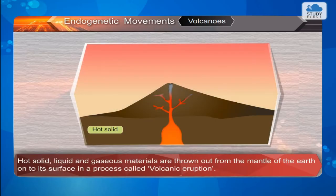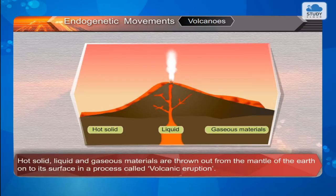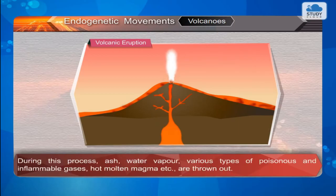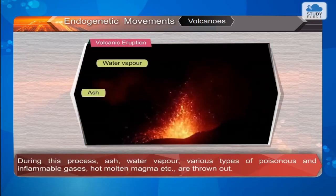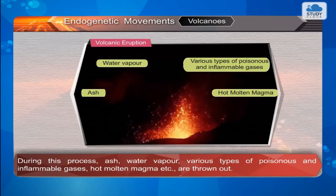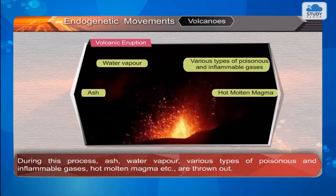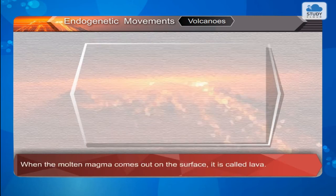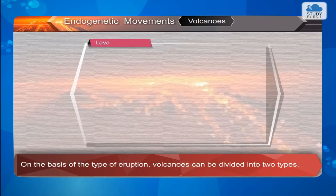Volcanoes: Hot, solid, liquid, and gaseous materials are thrown out from the mantle of the Earth onto its surface in a process called volcanic eruption. During this process, ash, water vapour, various types of poisonous and inflammable gases, hot molten magma, etc. are thrown out. When the molten magma comes out on the surface, it is called lava. On the basis of the type of eruption, volcanoes can be divided into two types.